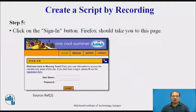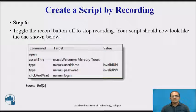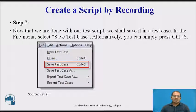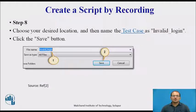Next, click on the Sign-in button. Firefox should take you to this page. Toggle the Record button off to stop recording. Your script should now look like the one shown. Now that we are done with our test script, we shall save it as a test case. In the File menu, select the test case, or click the shortcut Save button, or press Ctrl-S. Choose your desired location, name the test case as 'Invalid Login', and click the Save button.